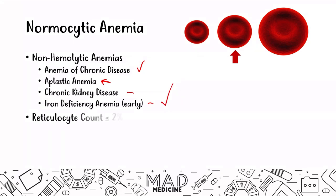In normocytic anemias, especially non-hemolytic normocytic anemias, you are going to have a reticulocyte count less than 2%. In these conditions, there is simply a decrease in the production of red blood cells. In hemolytic anemias, the body detects low red blood cells and ramps up production, increasing the reticulocyte count — but we won't see that in non-hemolytic anemias.